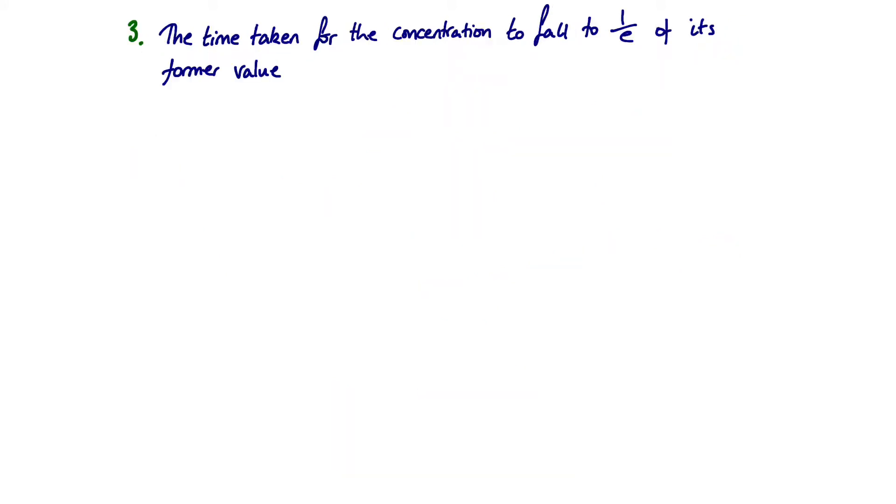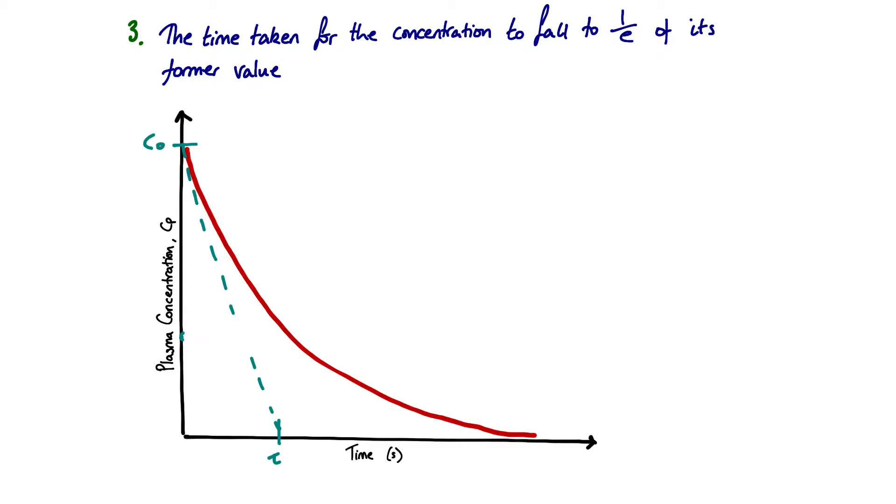Our third definition of the time constant was that it was the time taken for the concentration to fall to 1 over e of its former value. So let's look at that. We go back to our graph. What we're saying is what is the concentration at this point here? So at our time being tau, we extrapolate back on what's our plasma concentration at this point. Our plasma concentration at any point is given by our familiar equation. Now we're just saying if we substitute t, a generic time, for a specified time of tau, what can we work out the concentration at time tau to be?